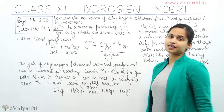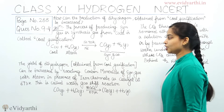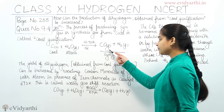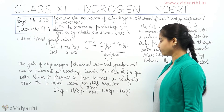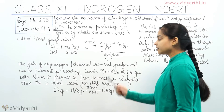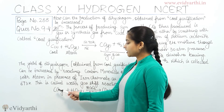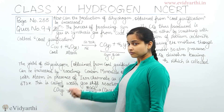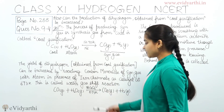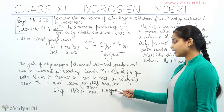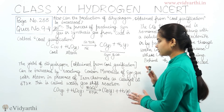The yield of dihydrogen obtained from coal gasification can be increased by reacting carbon monoxide of the syngas with steam in the presence of iron chromate (FeCrO₄) as catalyst at 673 Kelvin. This is called the water gas shift reaction. The equation is: CO(g) + H₂O(g), in the presence of FeCrO₄ at 673 Kelvin, gives CO₂(g) + H₂(g).